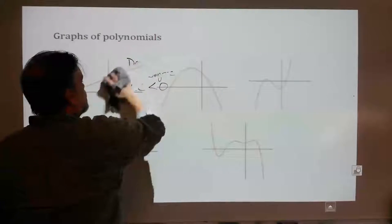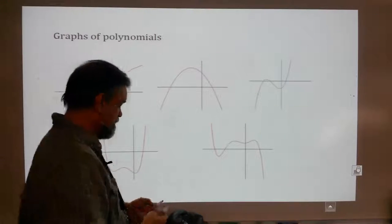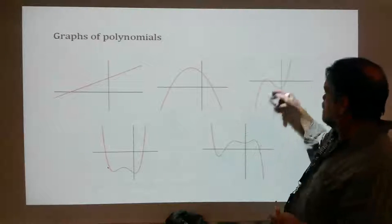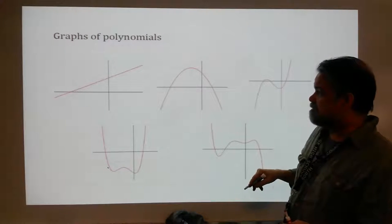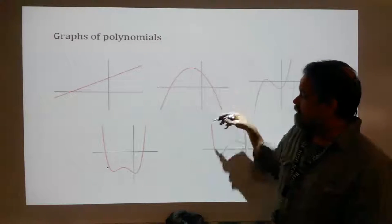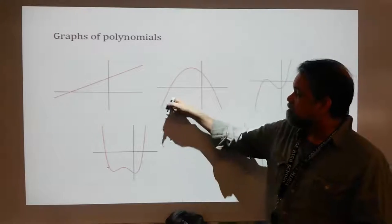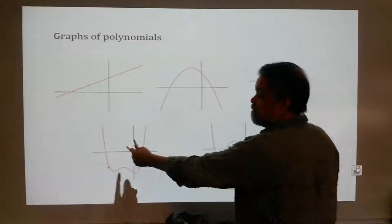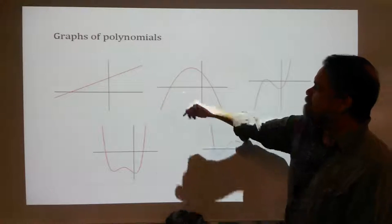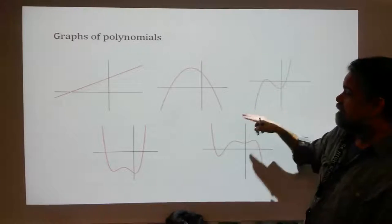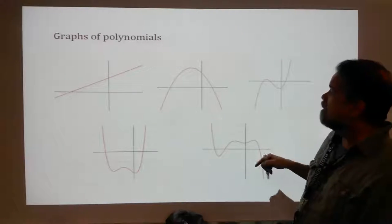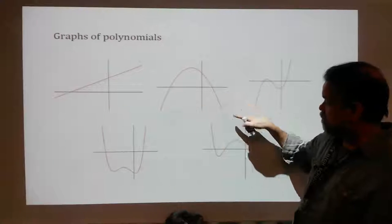Here are the five graphs we just looked at. This one and this one and this one are all odd degrees because they're starting from below and ending up above, or starting from above and ending down below. This one and this one are even degrees because you're ending up where you came from. The ones with a positive leading coefficient are this one, this one, and this one — because when you go to the right, it's going up. The ones with a negative leading coefficient are this one and this one — because as x is going up, y is going down.